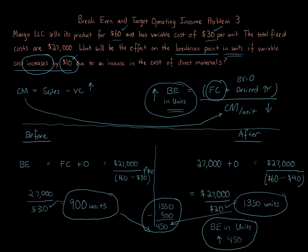The key idea is that if variable costs go up, the break-even in units required increases because break-even is all about covering fixed costs. Conversely, if sales price goes up, the break-even number of units goes down — it's the opposite effect. Variable costs go up, break-even goes up; sales price goes up, break-even goes down. These are very important relationships and formulas to understand.